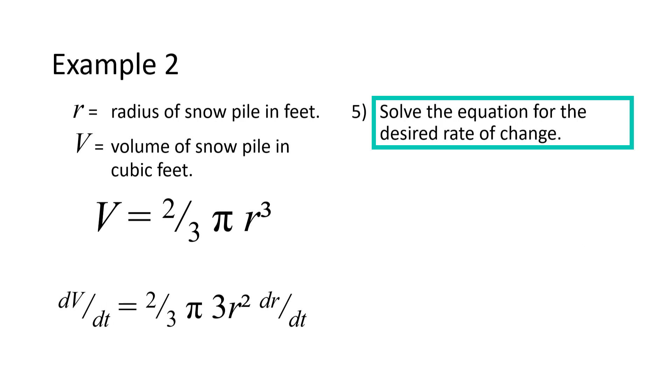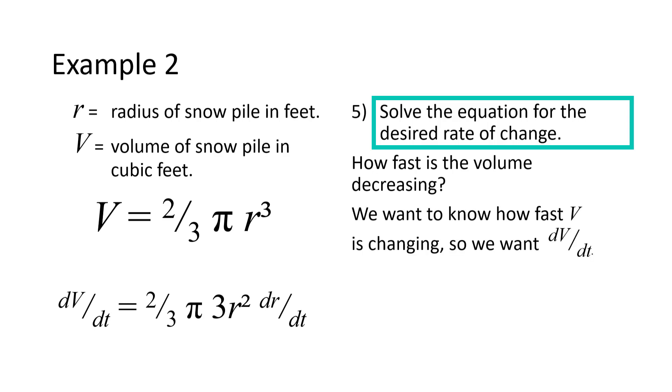The next step is to solve for the thing we were asked to find. The question asked, how fast is the volume decreasing? The volume is V, so to find out how fast that is changing, we want dV/dt. The equation already has dV/dt alone on one side. All that is left for us to do is to cancel the 3s.